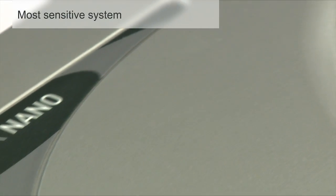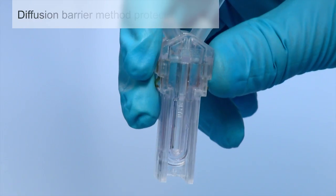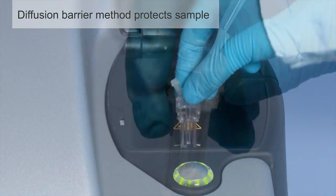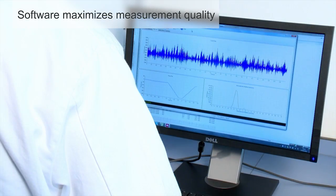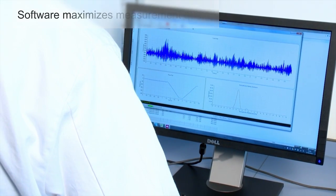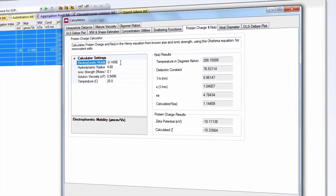To summarize, the Zetacizer Nano ZSP measures at concentrations as low as 1 mg per ml. The diffusion barrier method helps protect the sample from aggregation. The software automates the measurement and assesses measurement quality. The Protein Charge Calculator allows you to calculate protein charge from the measured mobility.